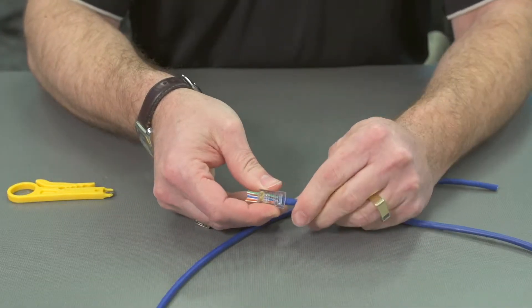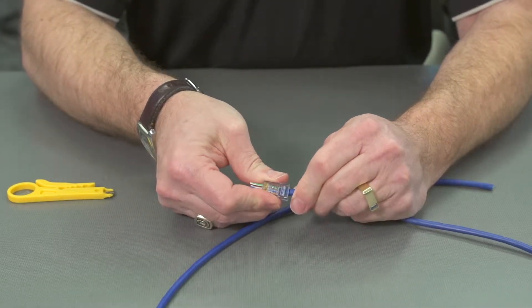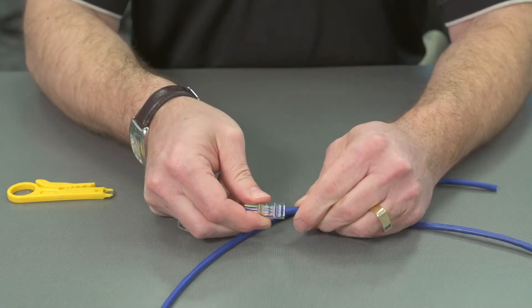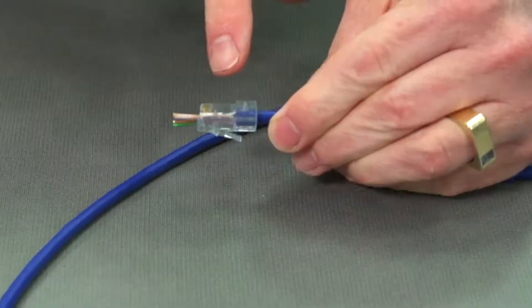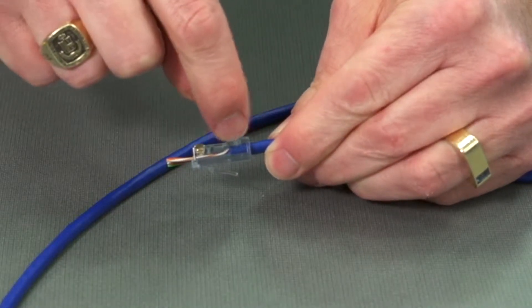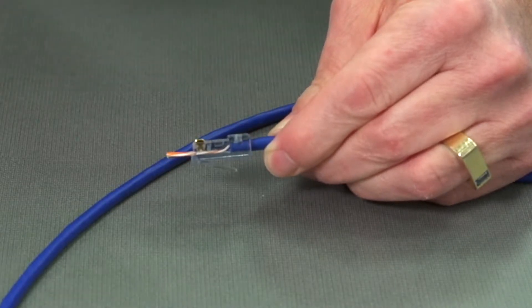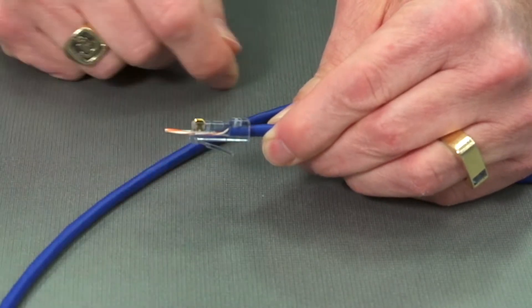Now as we poke that through, we can now check our colors again and make sure they're proper. I want to make sure that I have this jacket underneath this punch, because this is what's going to punch down on that jacket. And then each of these are lined up.